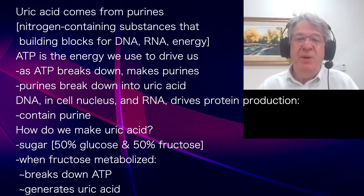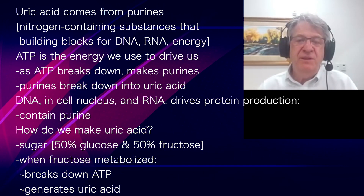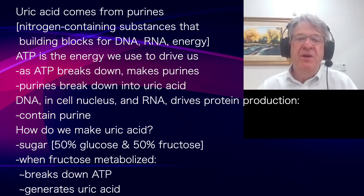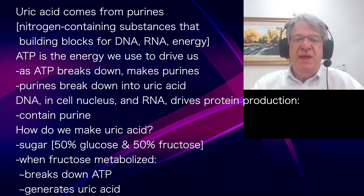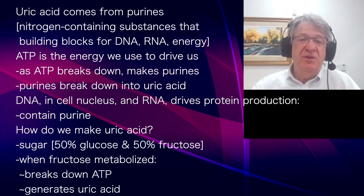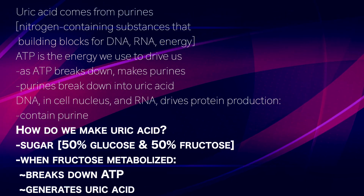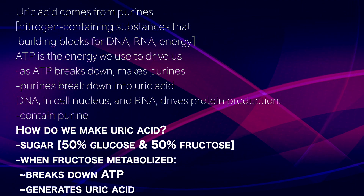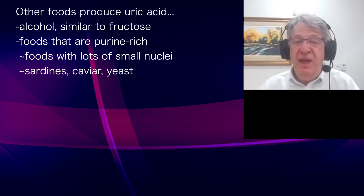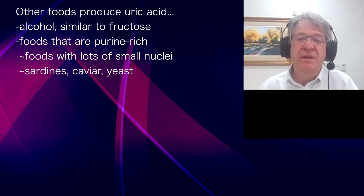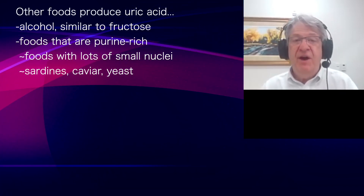We can make uric acid from sugar. When fructose is metabolized, there is a breakdown of ATP — the ATP starts to decrease and gets broken down, generating uric acid. Other foods can also produce uric acid: alcohol, for example. You can also make uric acid from foods that are purine-rich — foods that have a lot of RNA and DNA.